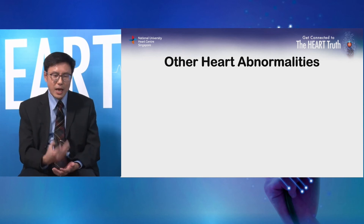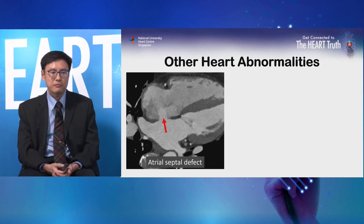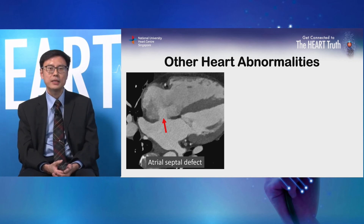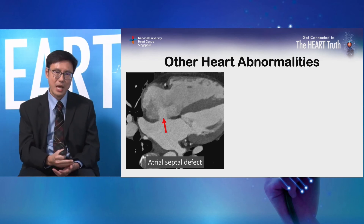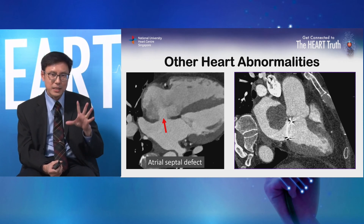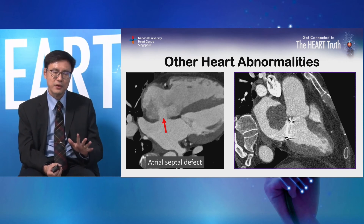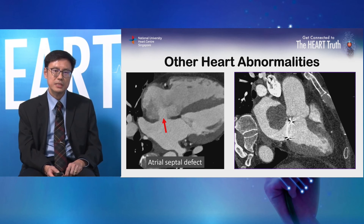Besides the coronary arteries, CT can tell us about other heart abnormalities. This patient has a very large hole in the heart — you can see contrast and blood flowing from the left heart chamber into the right heart chamber, which is not supposed to happen. Another example is a patient with a metallic valve — you can see the bright starburst pattern — and a black object in the heart chamber, which is a blood clot. This is very dangerous because the blood clot can block the heart valve, causing sudden cardiac death.